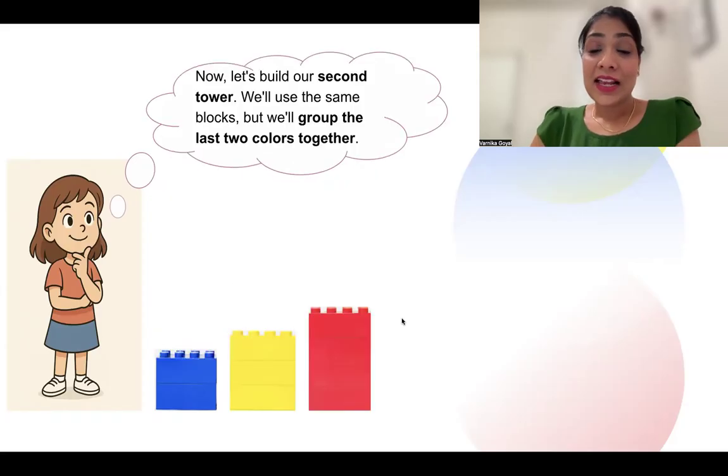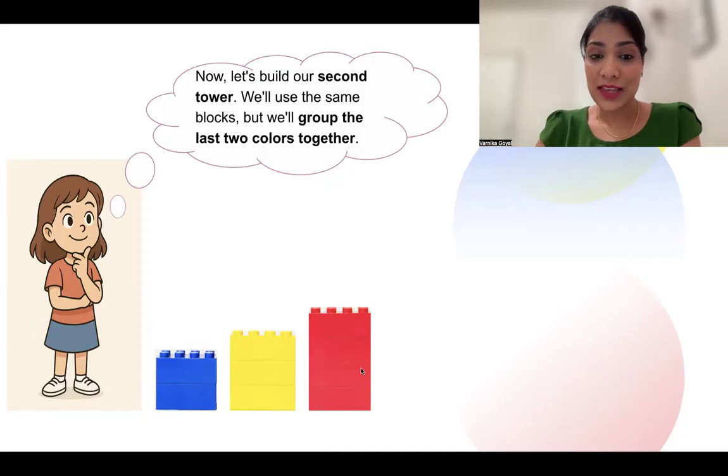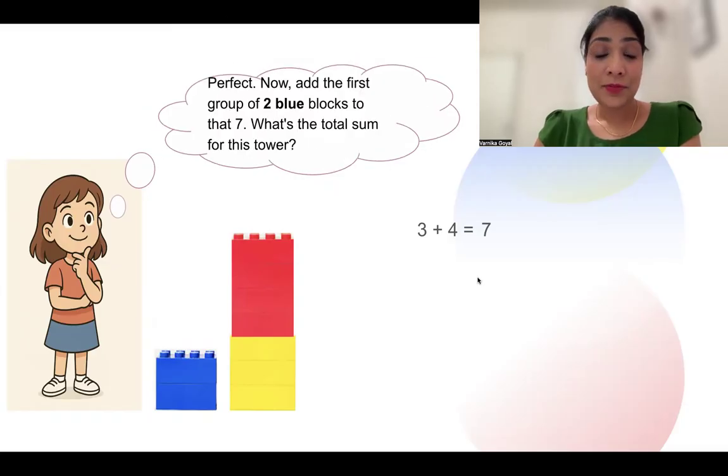Now let's build our second tower. We'll use the same blocks, but this time we'll group the last two colors together. So what is the total sum? 3 + 4 is equal to 7. Perfect.